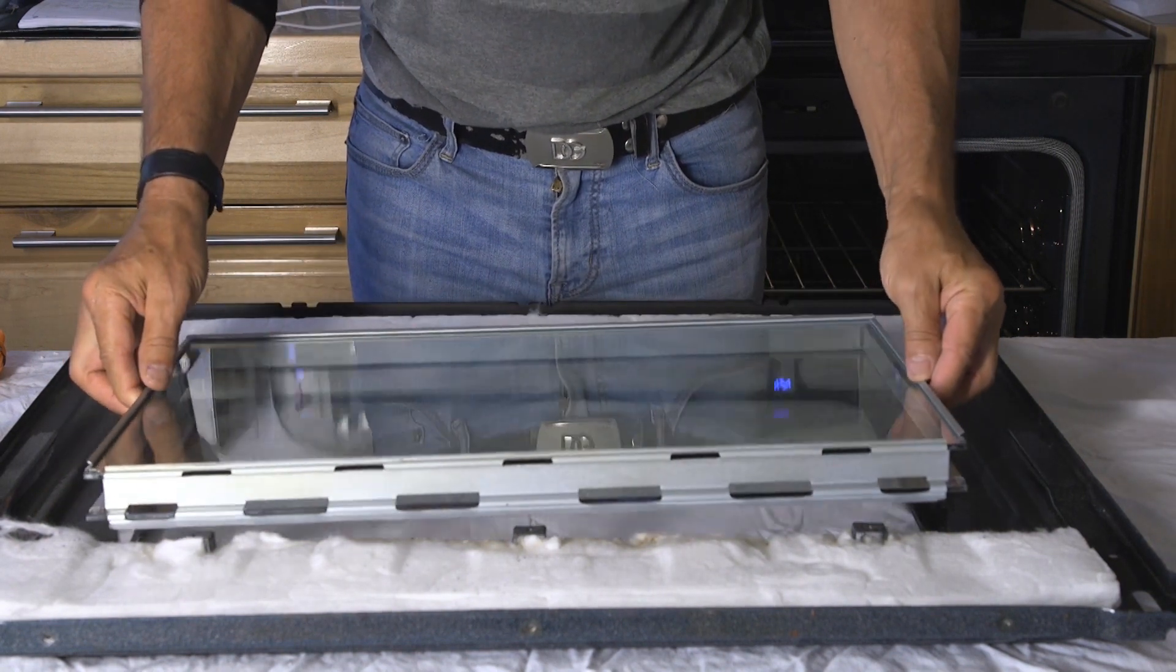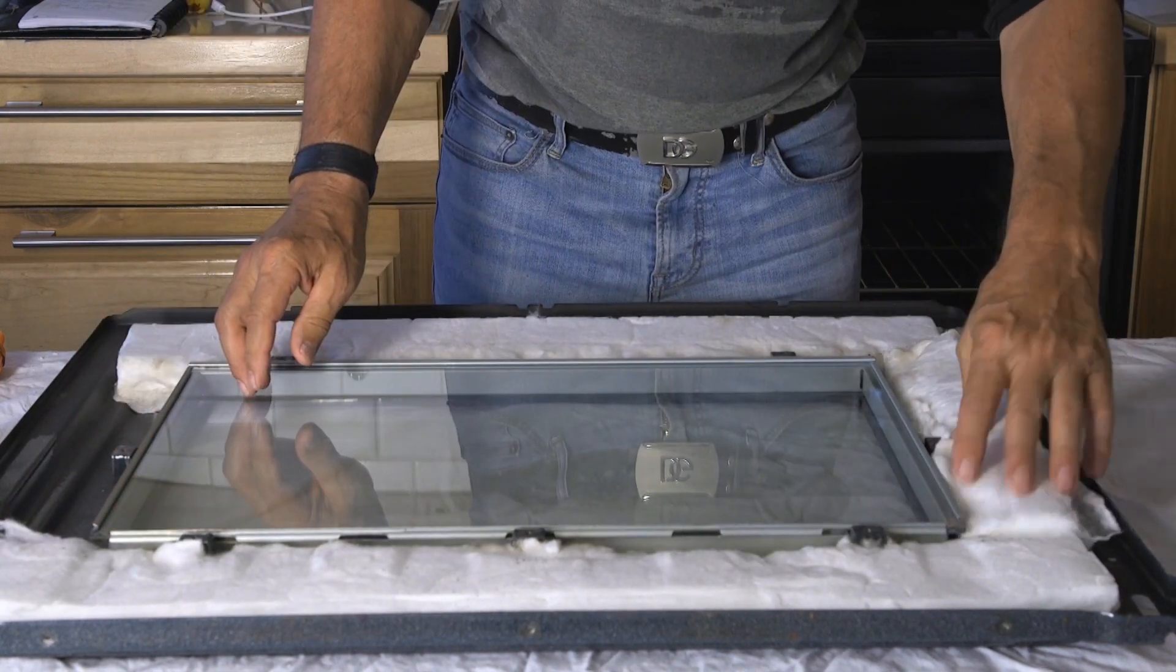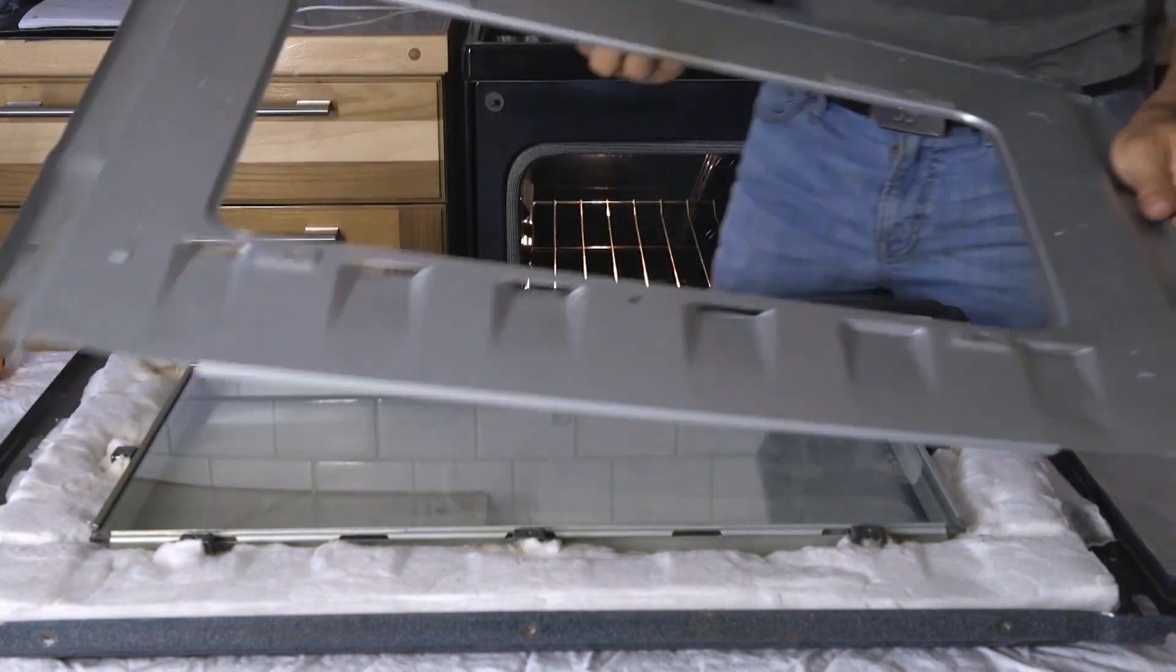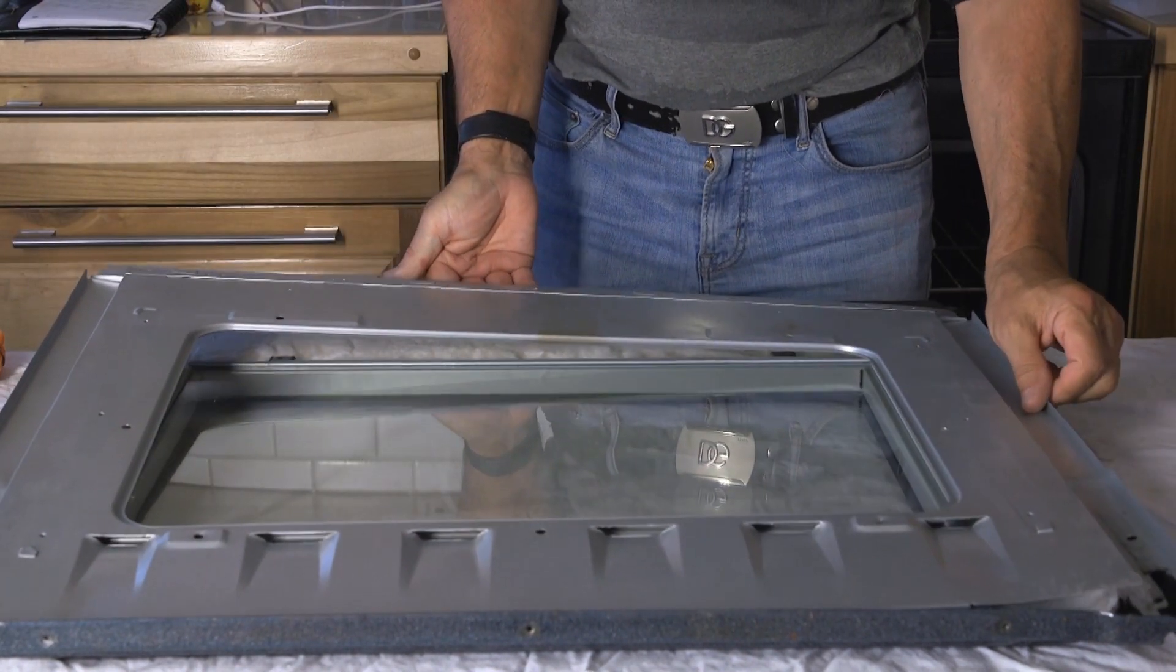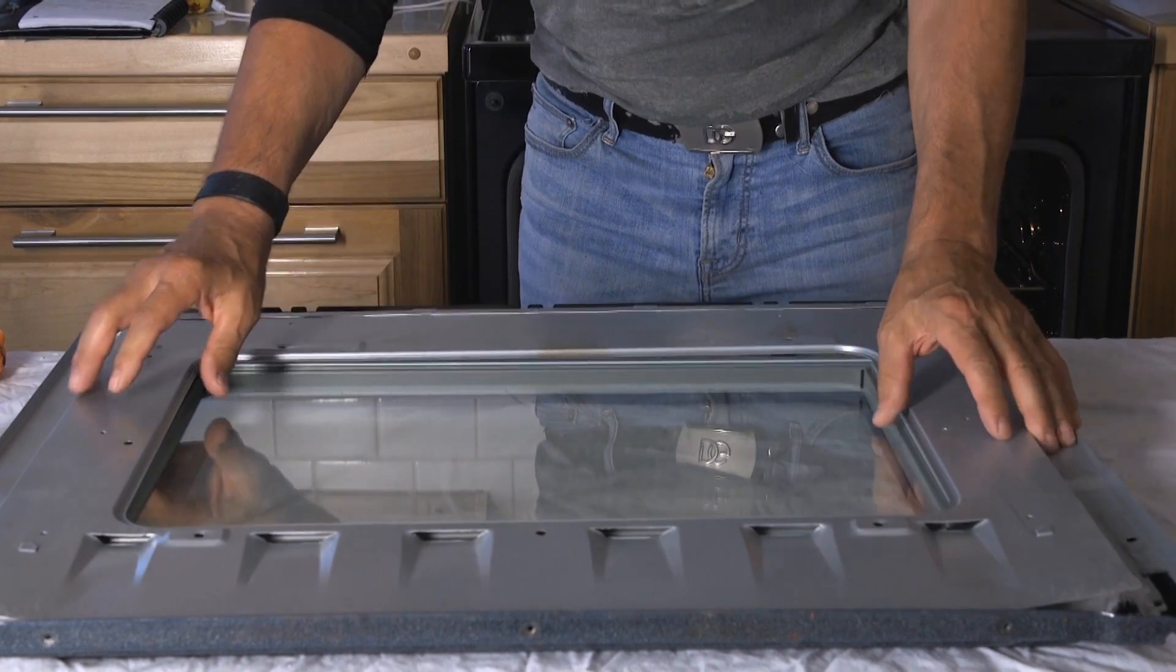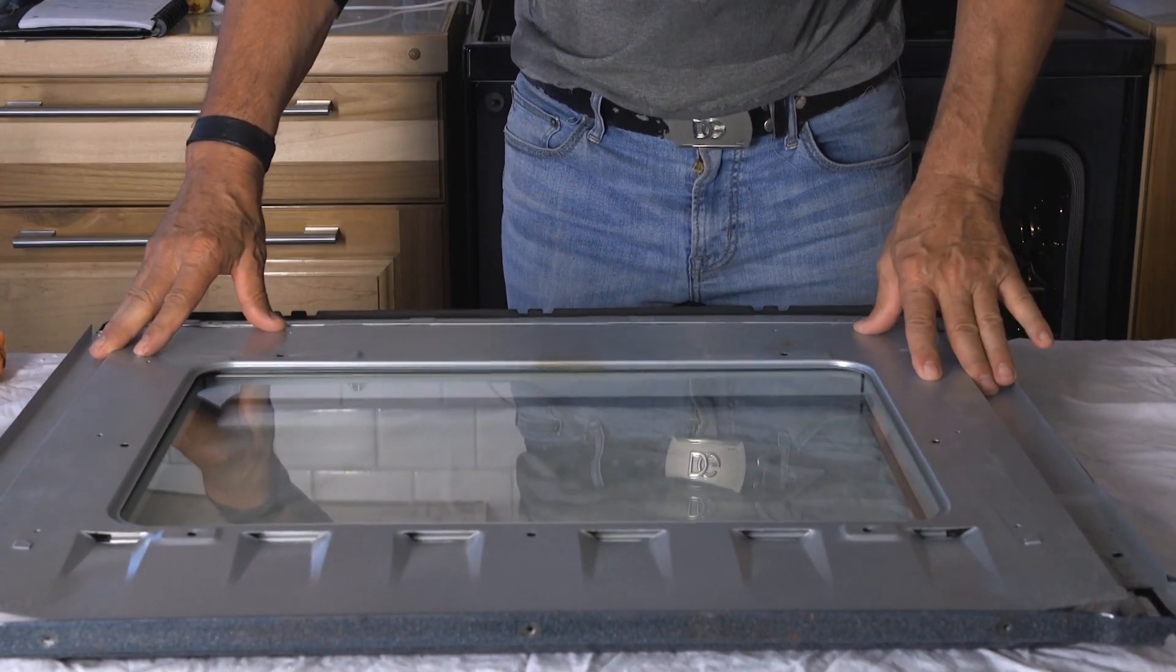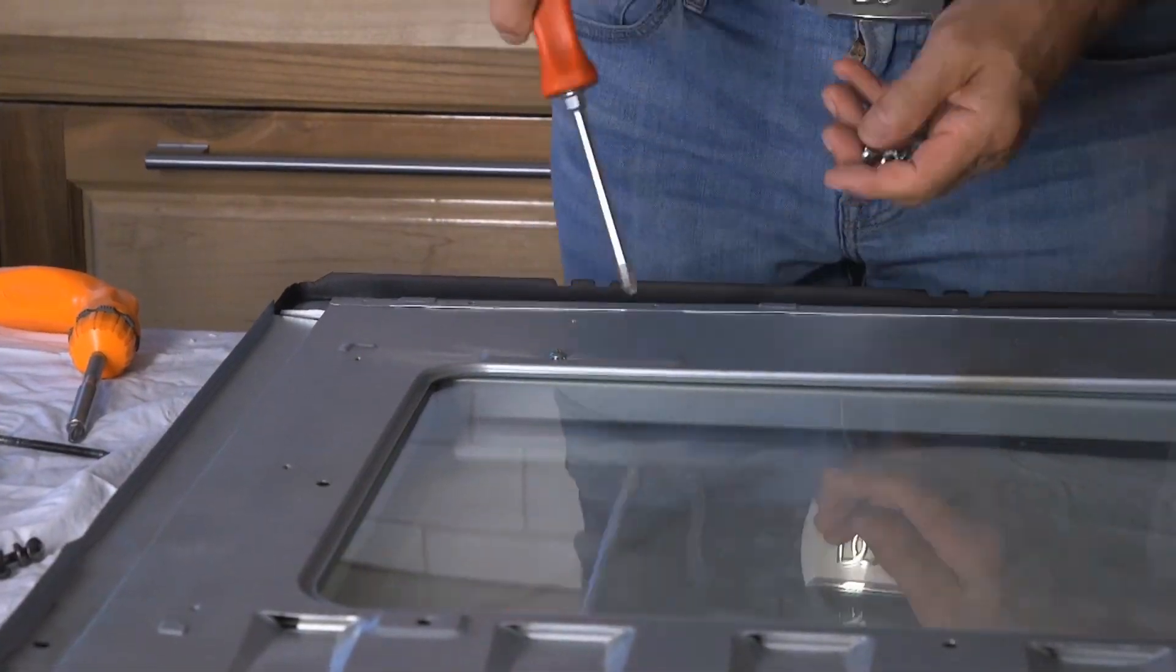Go the exact opposite way you did in the first place. Bring the heat shield and put back the 7 screws.